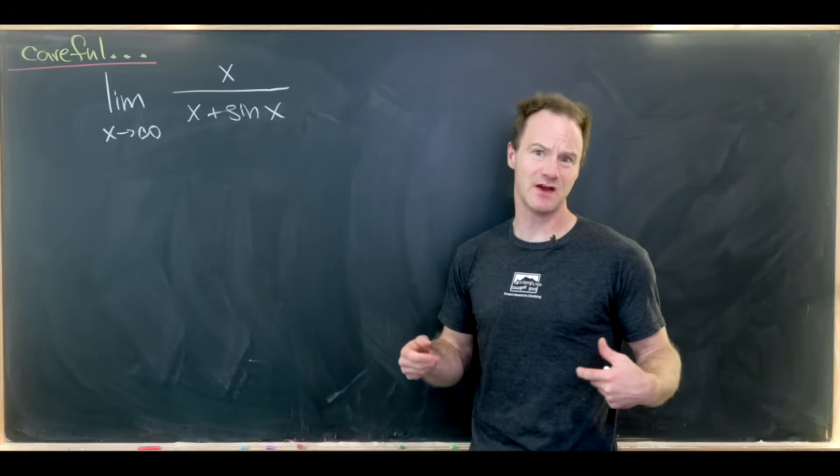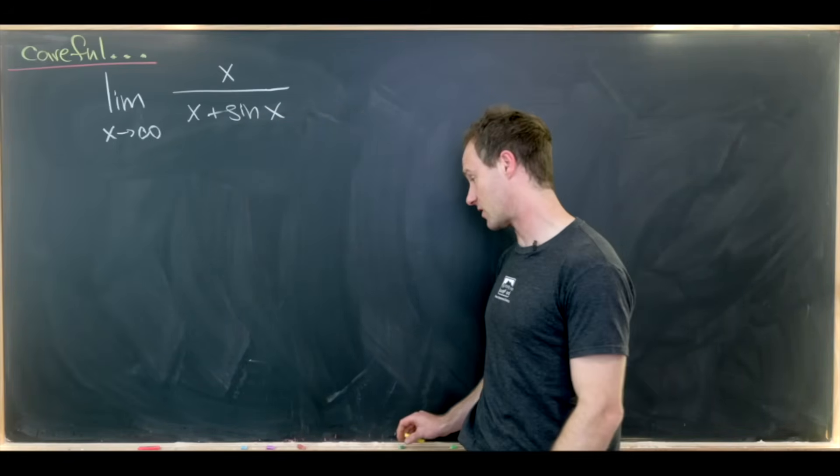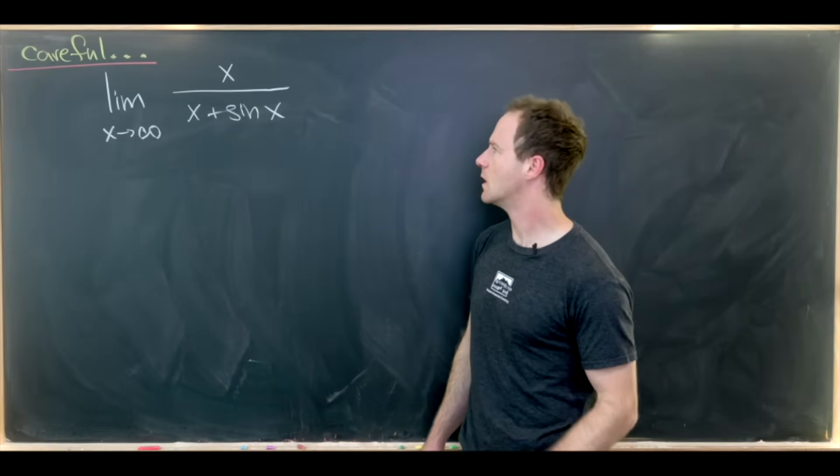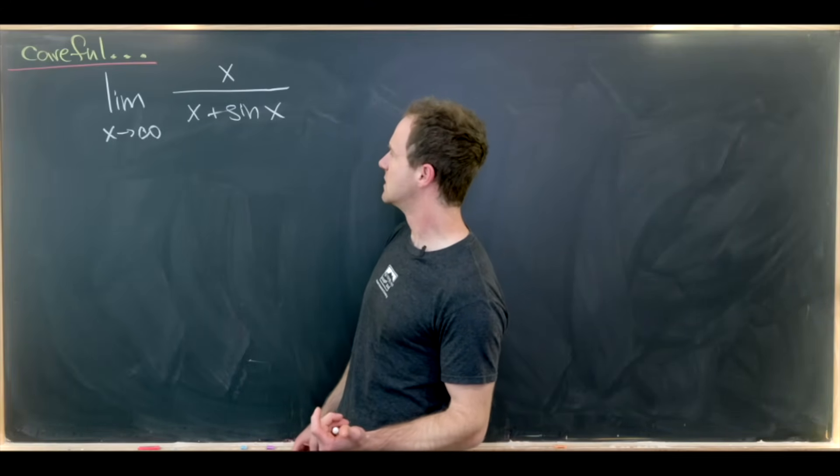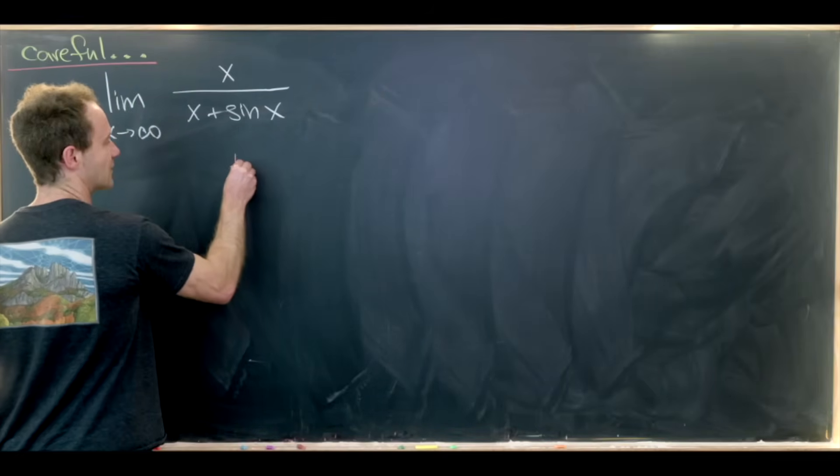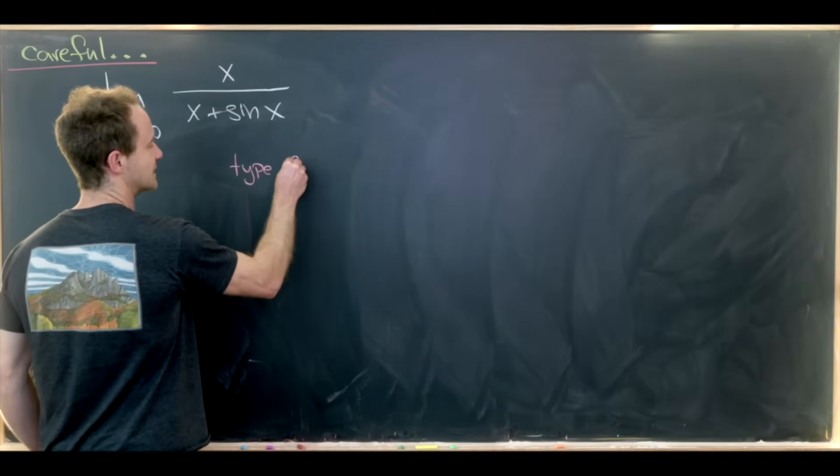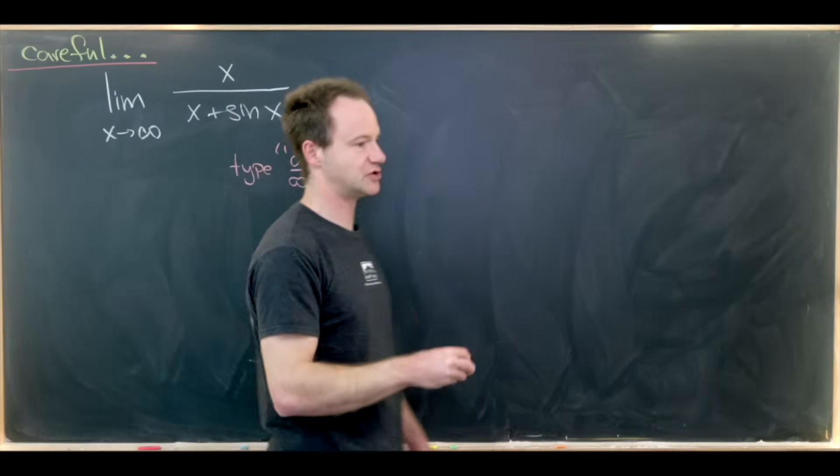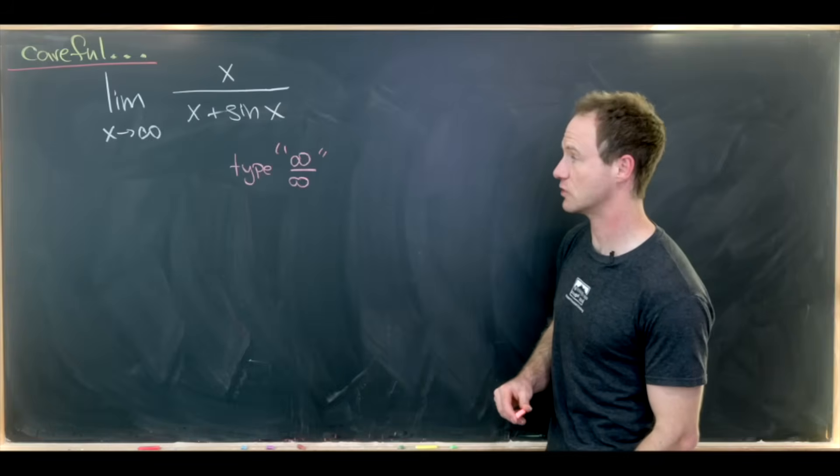So let's maybe approach this without much care first and see what goes wrong. Let's note that this is most definitely of type infinity over infinity because the numerator is approaching infinity and the denominator is approaching infinity as x approaches infinity.